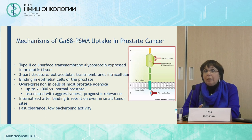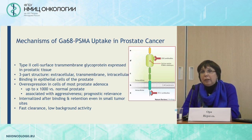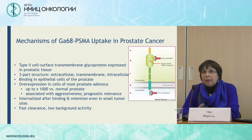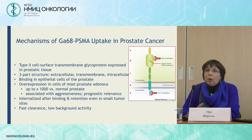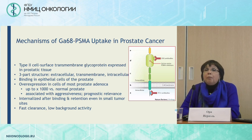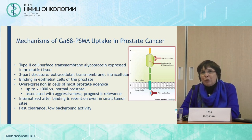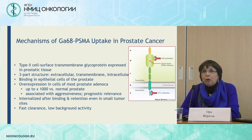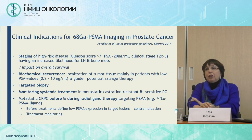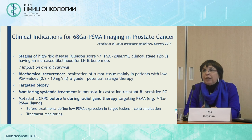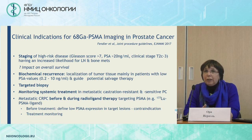PSMA is taken up by cell surface transmembrane glycoproteins in prostatic tissue and is overexpressed in most prostatic cancer cells up to 1,000 times compared to normal prostatic tissue. It is associated, like most agents we use, with the aggressiveness of the disease and therefore has prognostic relevance. Based on procedure guidelines published by the EANM and SNM, PSMA is today used at various stages of the disease.